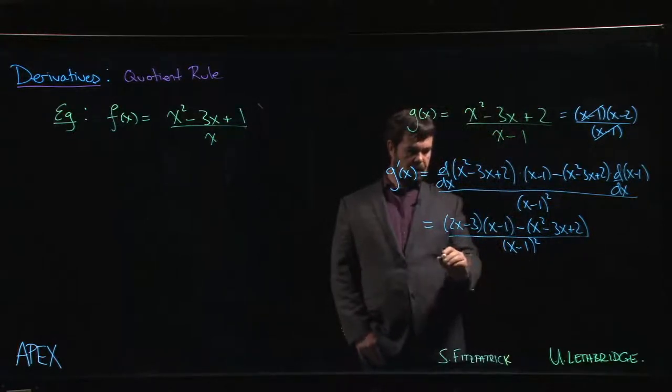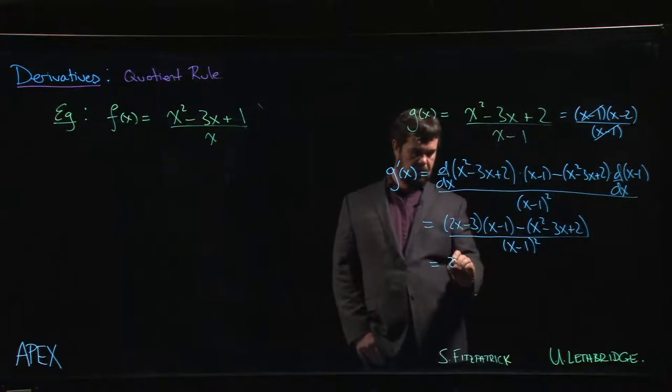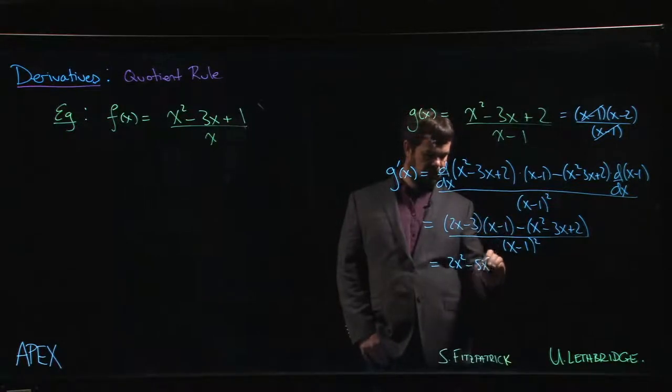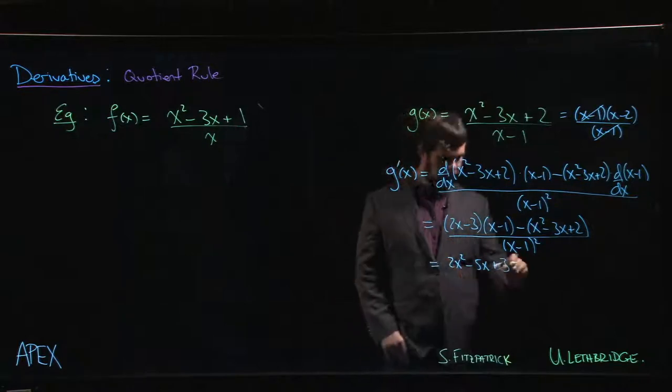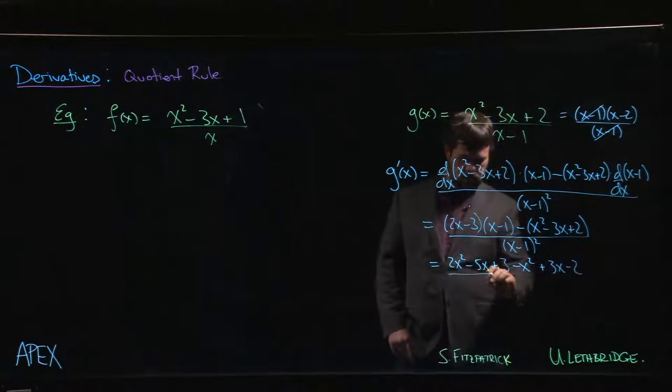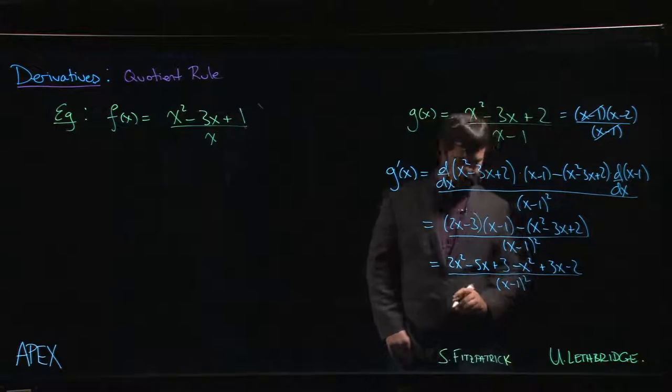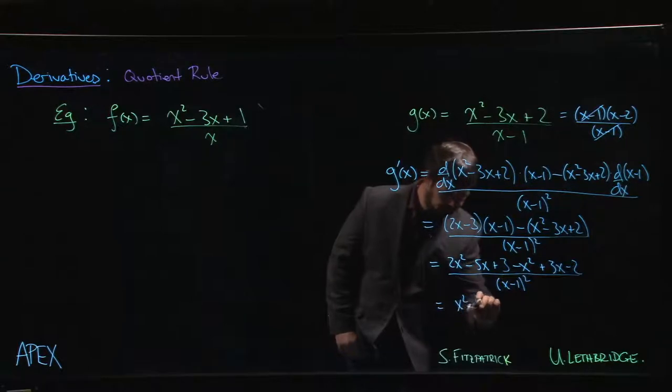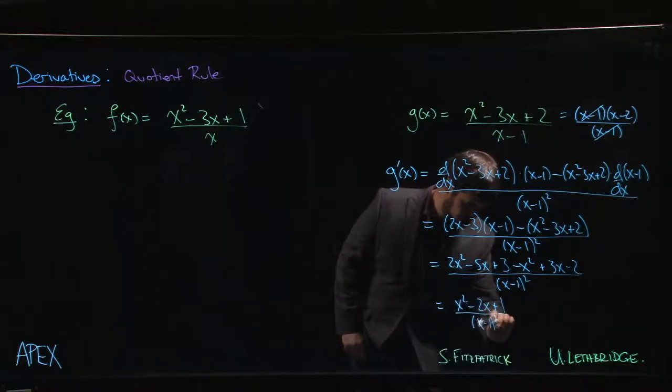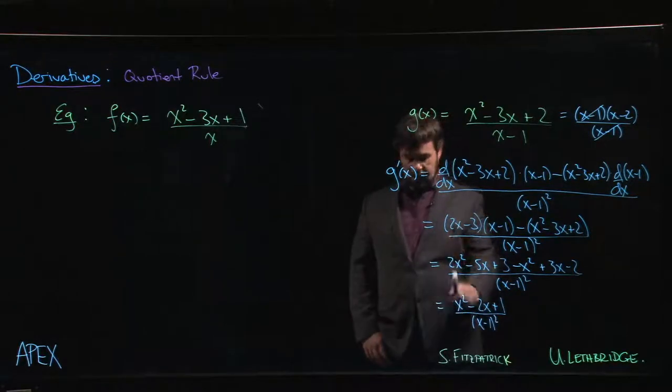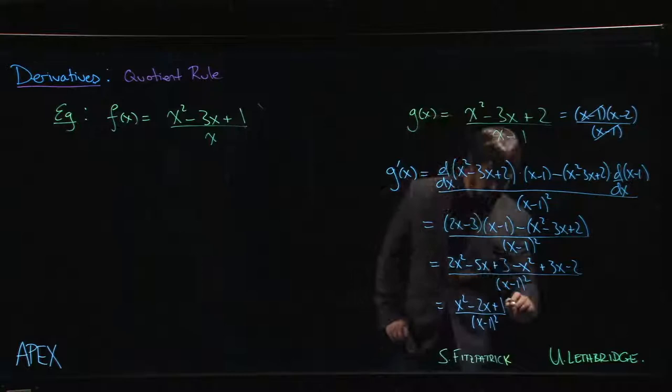All right. So what do we have? We have 2x squared minus 2x minus 3x minus 5x plus 3 minus x squared plus 3x minus 2 all over x minus 1 squared. This is x squared minus 2x plus 1 over x minus 1 squared.